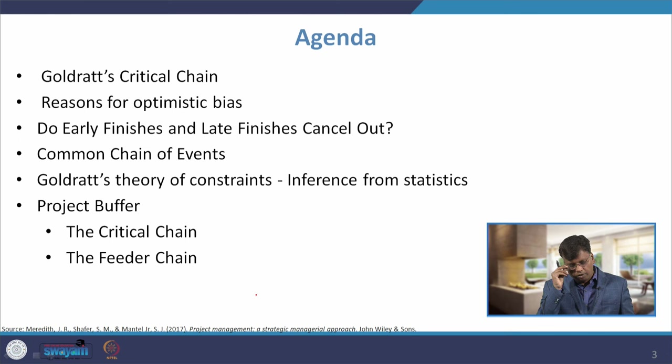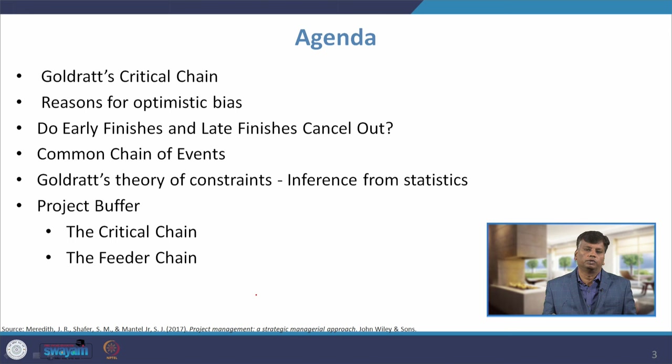The agenda for this lecture: I will explain what is critical chain and what are the reasons for optimistic bias, and whether early finishes of an activity and late finishes of a succeeding activity cancel out. Then common chain of events, then the theory of constraints proposed by Goldratt, and the buffers — one is the critical chain buffer, another is the feeder chain buffer.